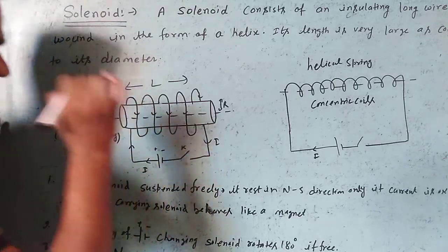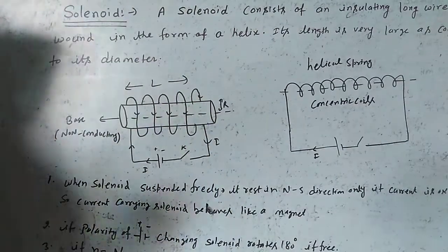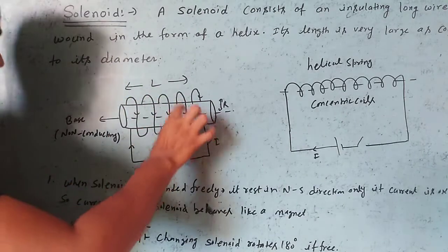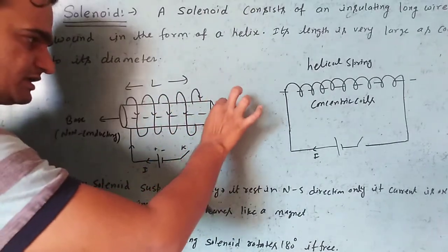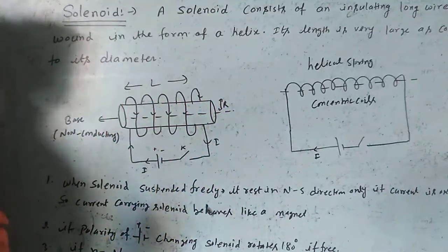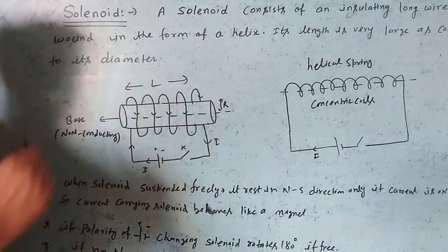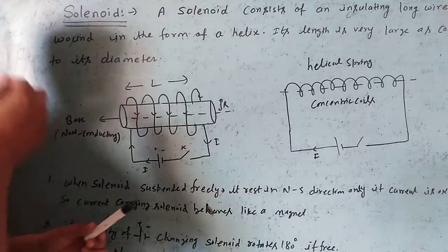The length of the solenoid is L, and the radius is r, so the diameter is 2r. This line is the base of the solenoid, made of non-conducting material.